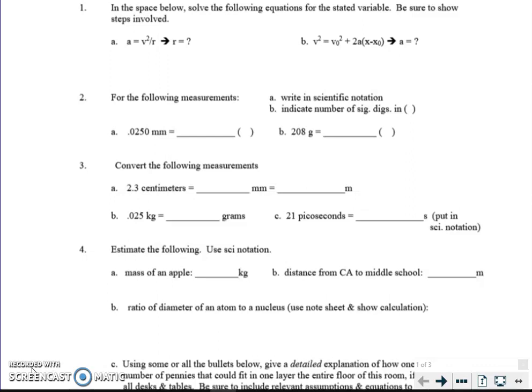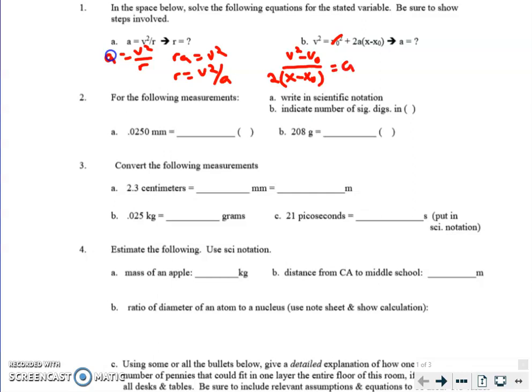Alright, so the first one, algebra: a = v²/r. I'm going to write that as a = v²/r, cross multiply, r times a = v², therefore r = v²/a. Many of you put a over v². And this one I want to solve for a. Let me restart that. I've got to move the v₀² to the left, so that becomes v² minus v₀², so that's gone. Now I divide by (x - x₀), and then I divide by the two. So there is the a.